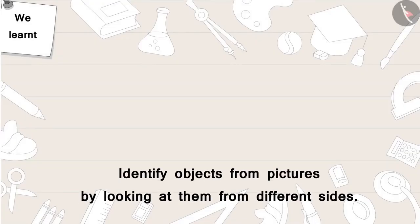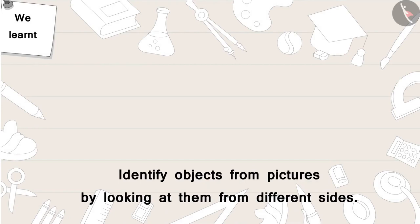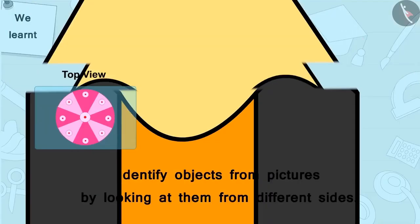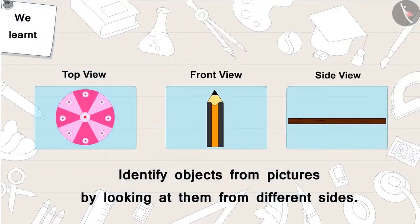In this video, with the help of some interesting examples, we learned to identify objects from pictures by looking at them from different sides. In the next video, we will see some misconceptions about looking at objects from different sides.